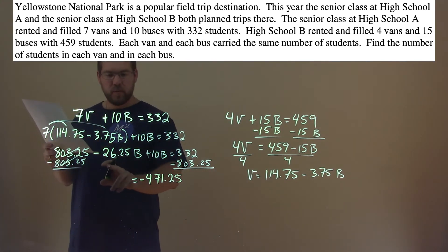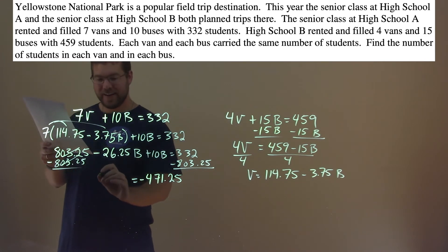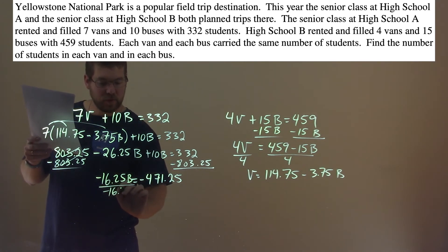Then, we may combine negative 26.25b and 10b. That comes out to be a negative 16.25b. Divide both sides by negative 16.25.